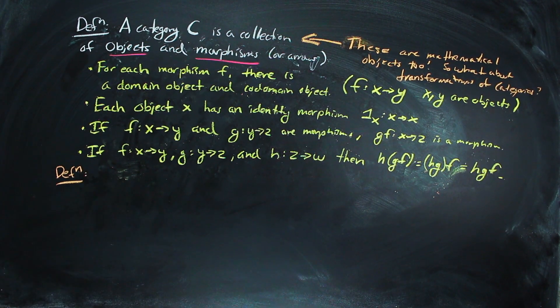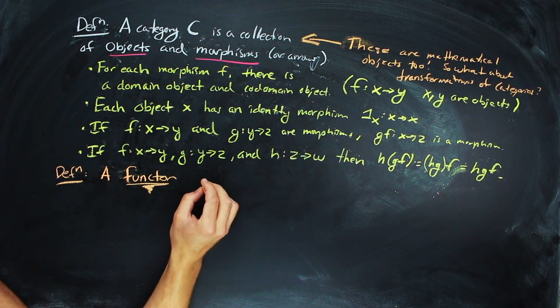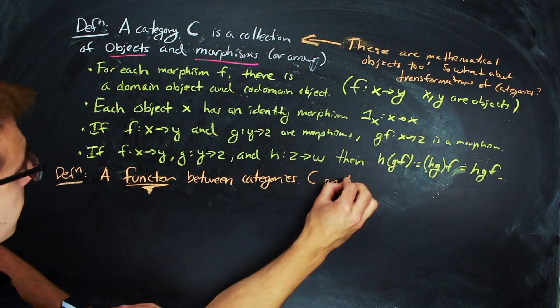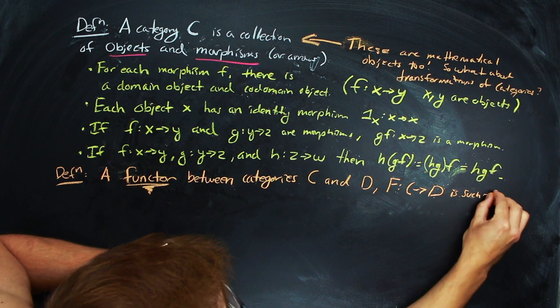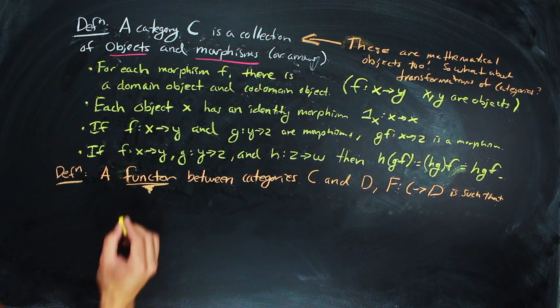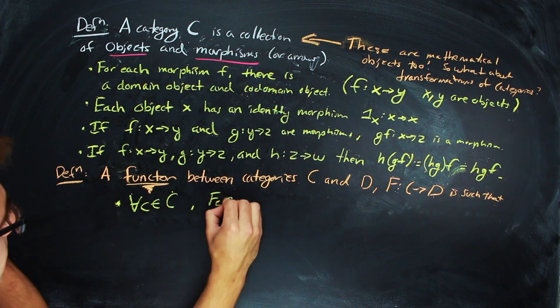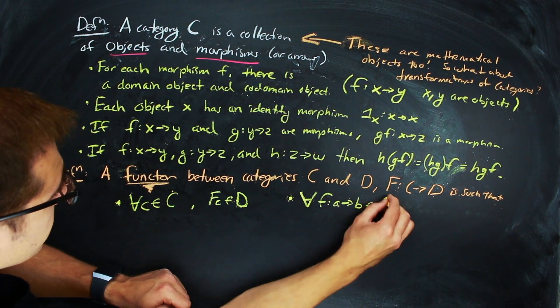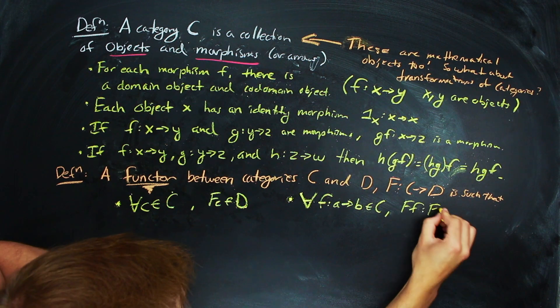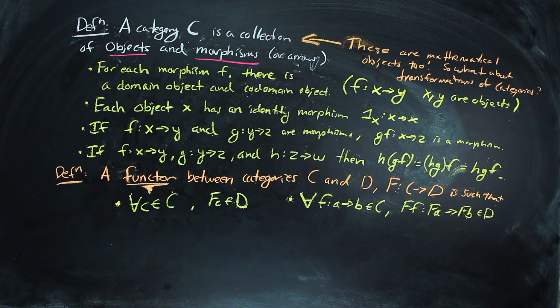These transformations are called functors. A functor F from a category C to a category D contains the following information: one, an object big F(c) in D for each object c in big C, and two, a morphism big F(f) for each morphism little f that respects its domain and codomain.